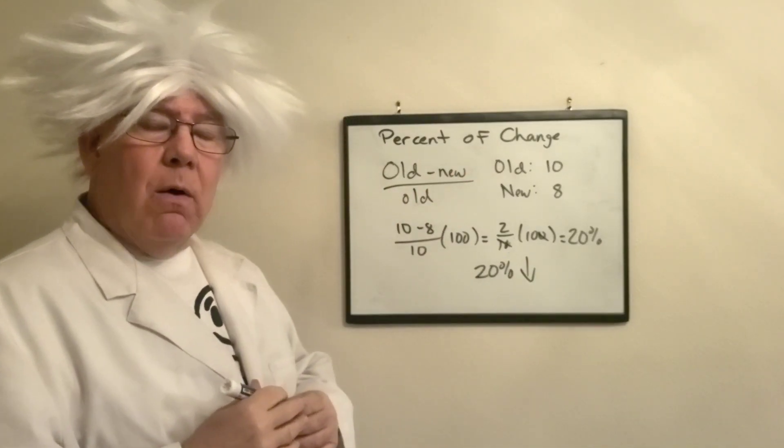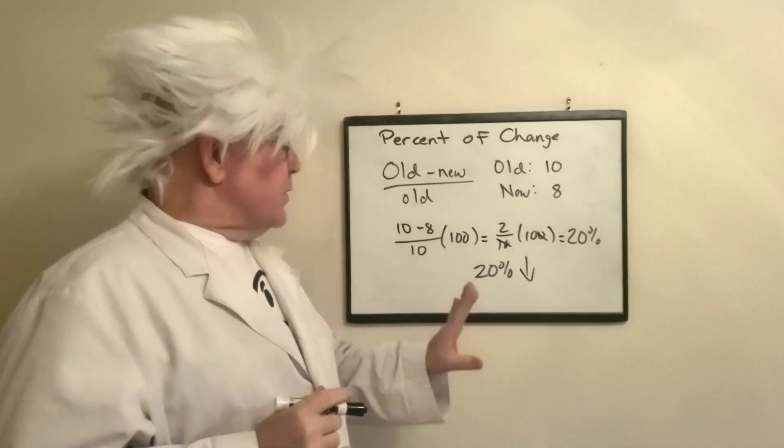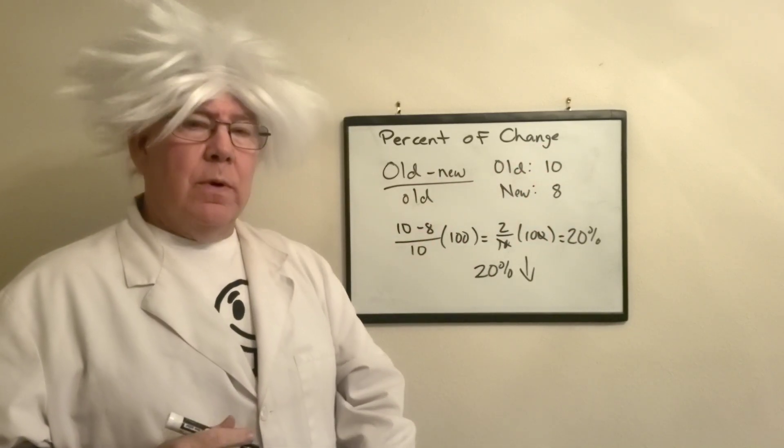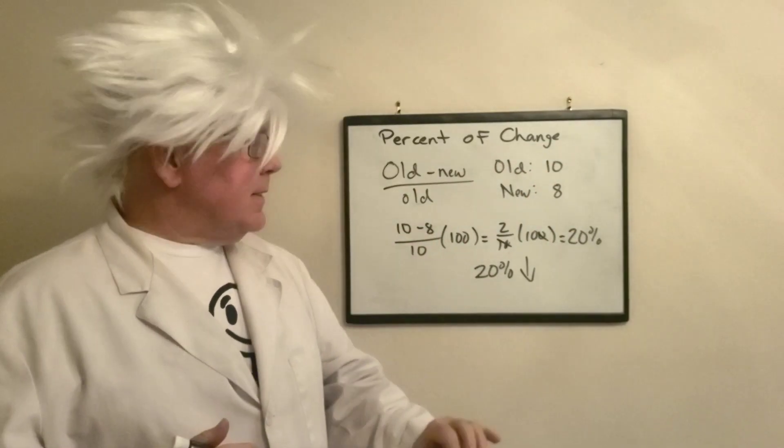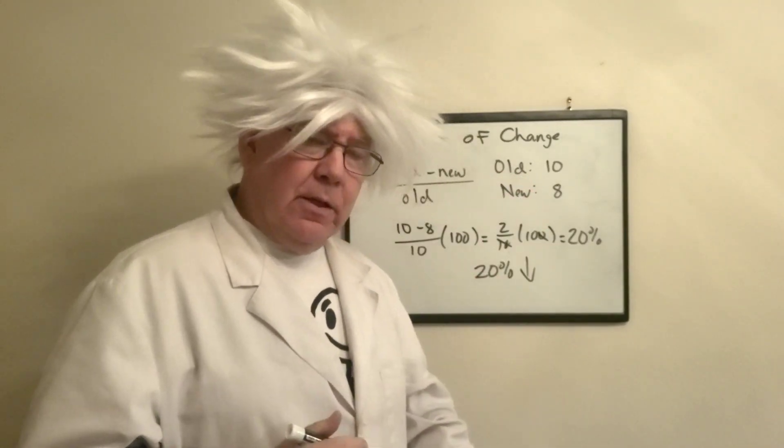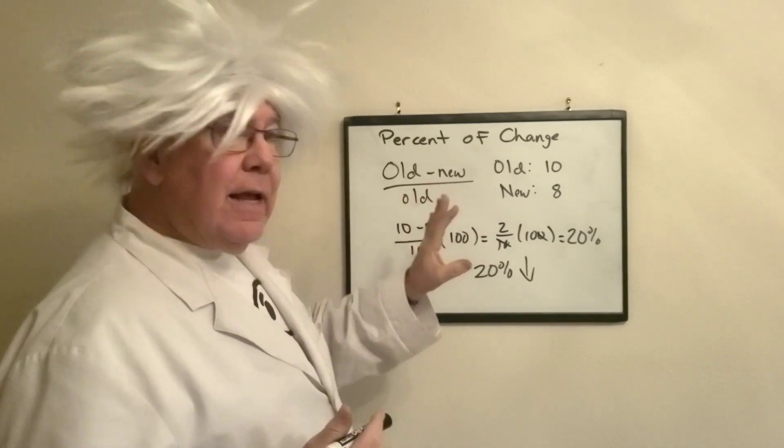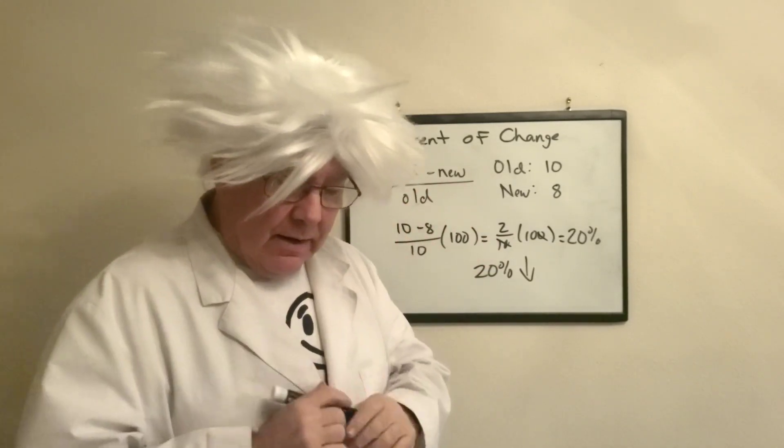Here's the way this works. If the old value is greater than the new value, it's a decrease. If the old value is less than the new value, it's an increase. And you're going to find that your increases will have a negative value.